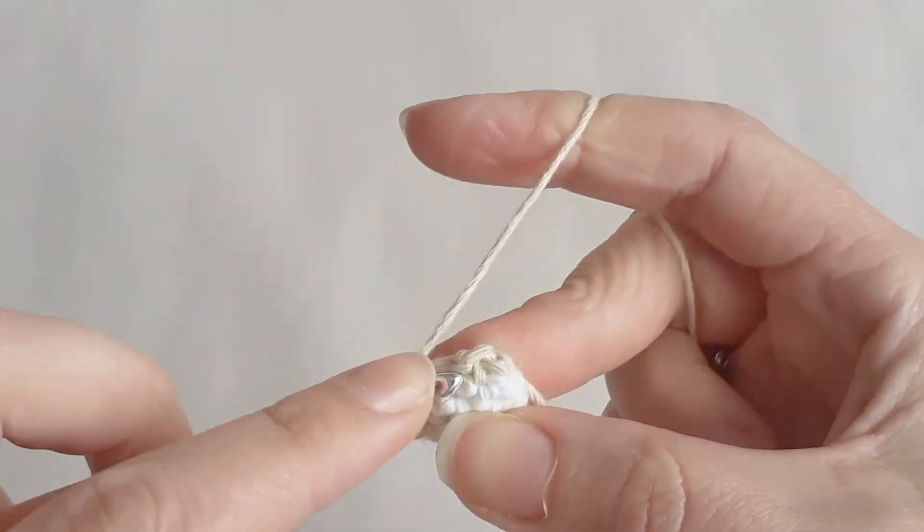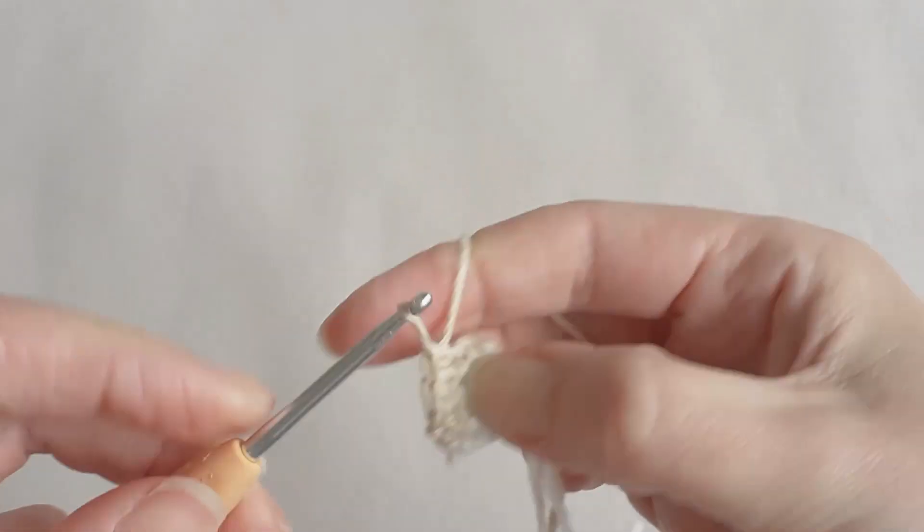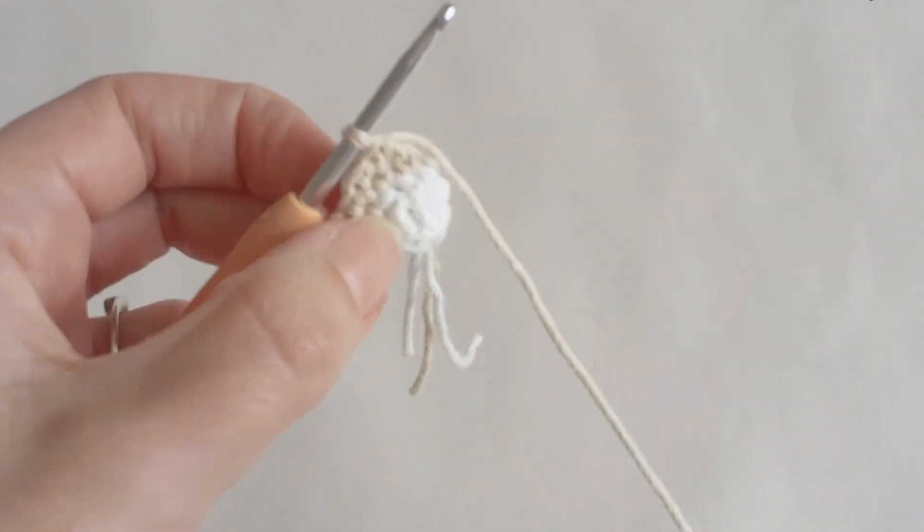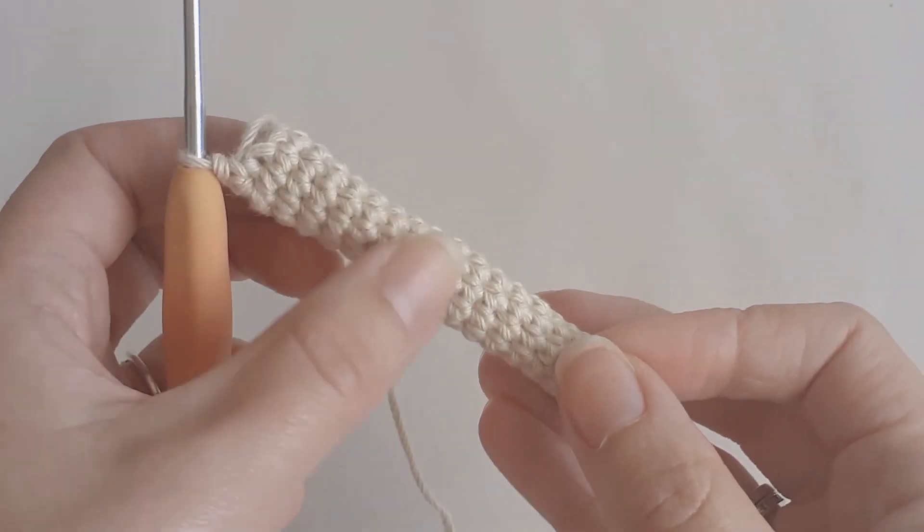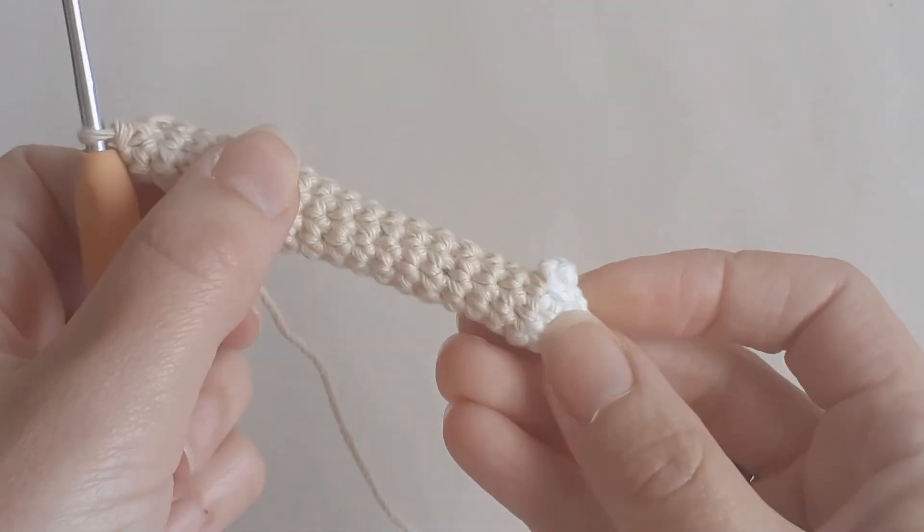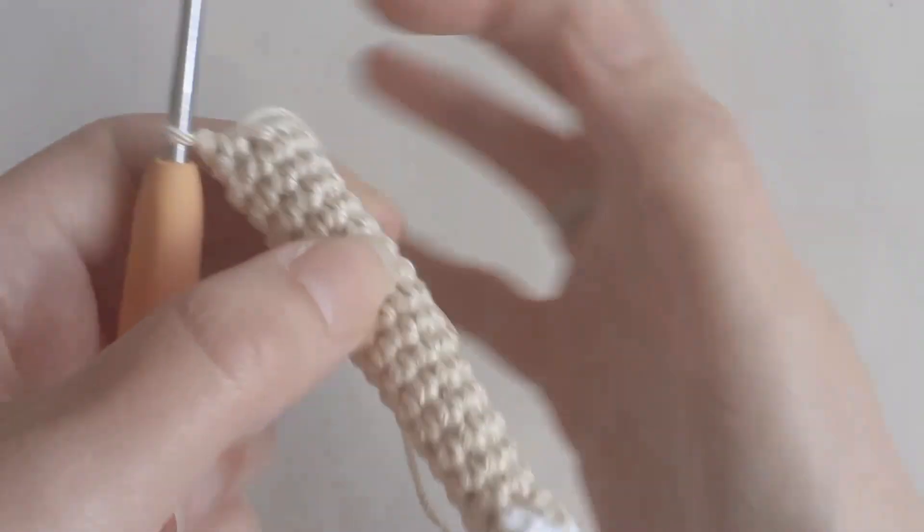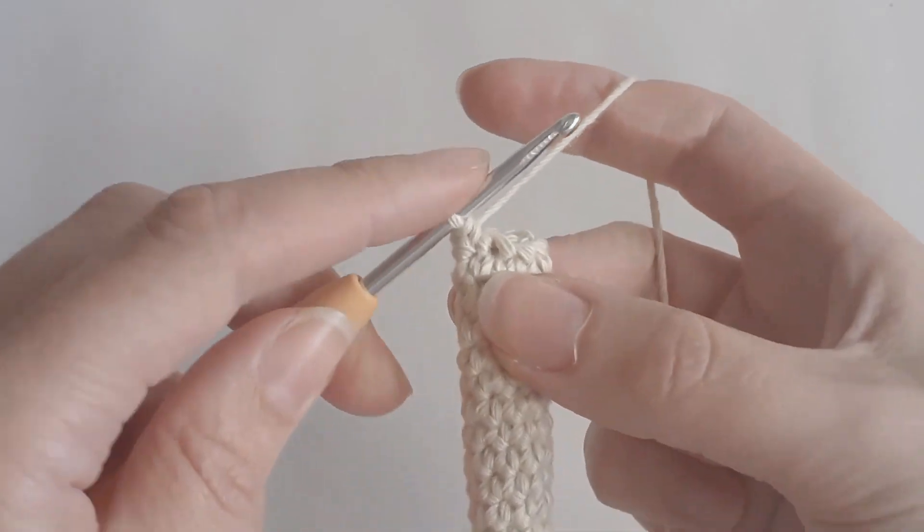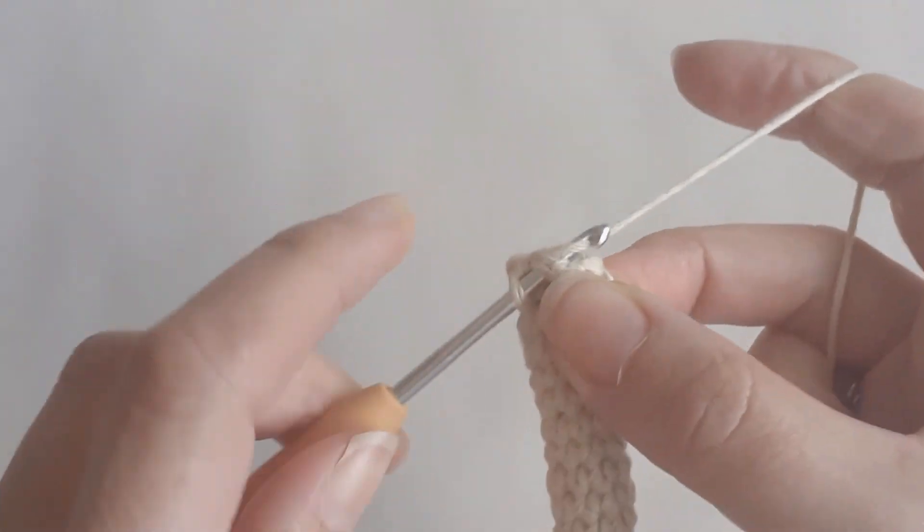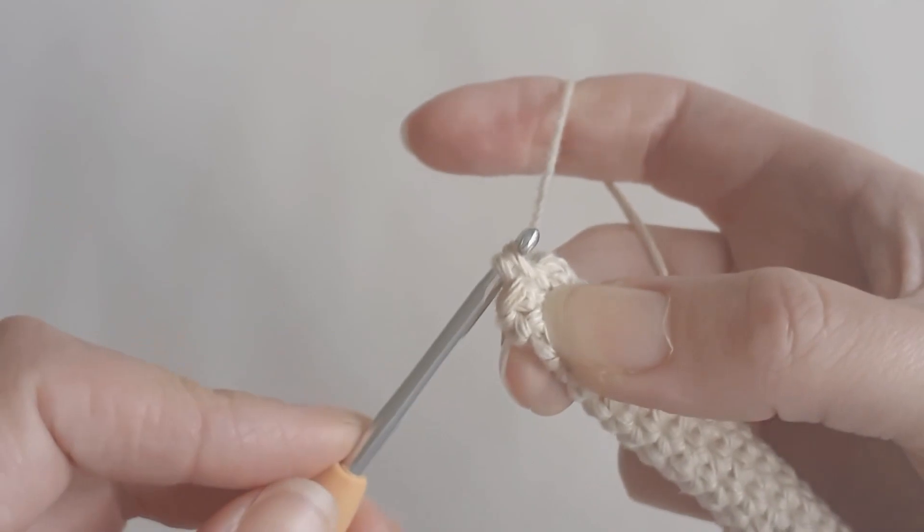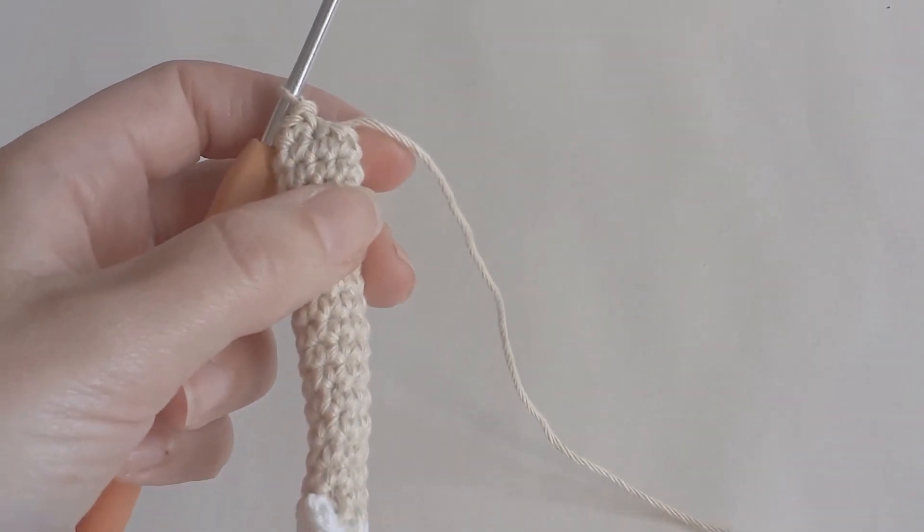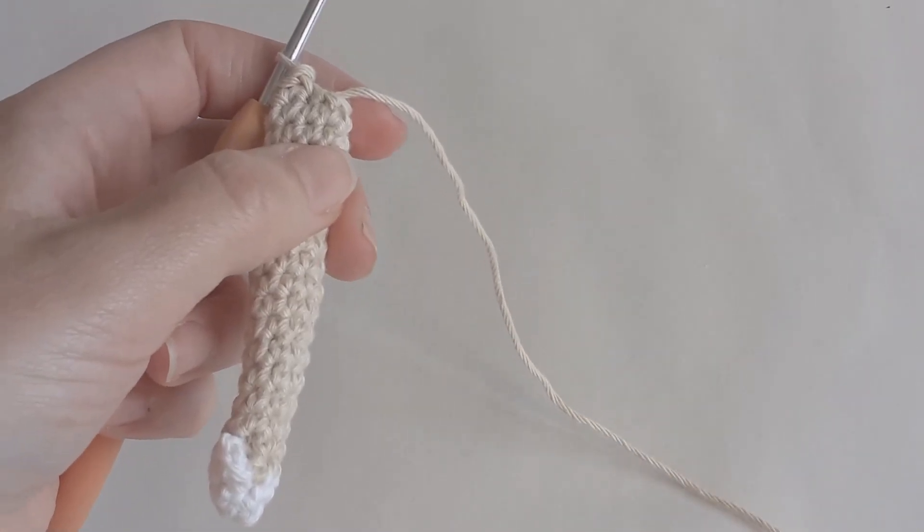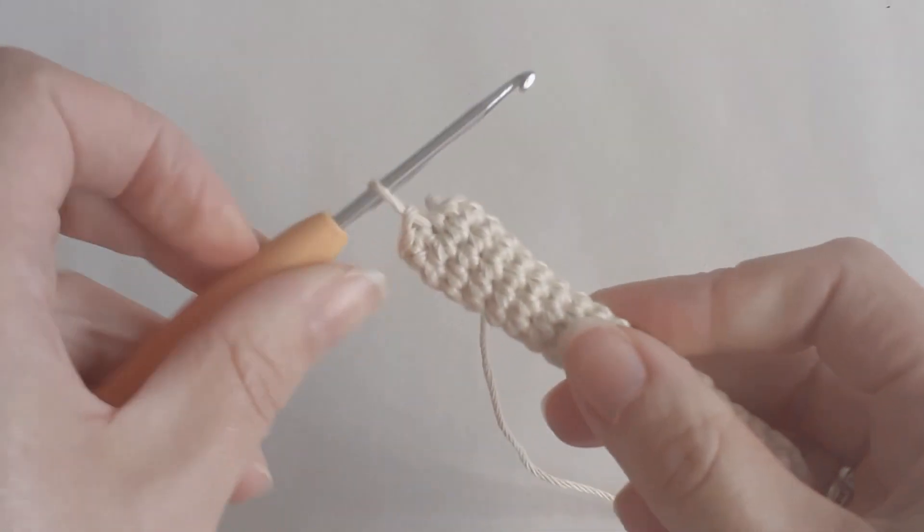So just one in each stitch for a total of 17 rows. This is how it looks after my 17 rows - it doesn't take too long. The next thing you want to do is slip stitch to the next stitch and cut your yarn long enough to stitch it on. Pull it through.